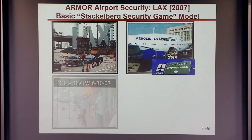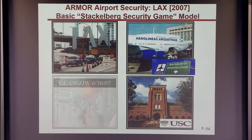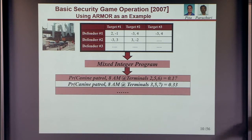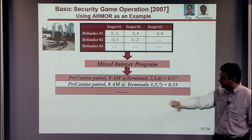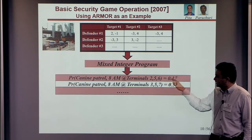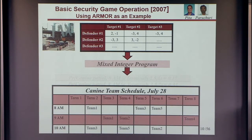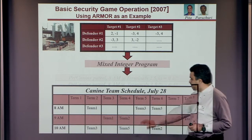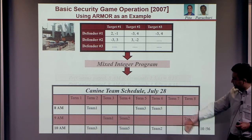The same basic model is also in use at Buenos Aires Airport and at USC. The system feeds a game matrix into a mixed integer program, which provides a probability distribution over defender strategies — for example, do a canine patrol at 8am at terminals 2, 5, and 6 with one probability, and terminals 3, 5, and 7 with another. We then sample from this distribution to get an actual schedule handed to the officers: at 8am, send Team 1 to Terminal 2, Team 5 to Terminal 3, and so on.